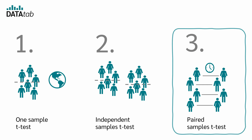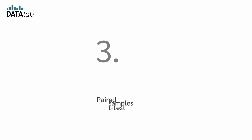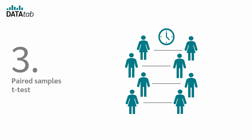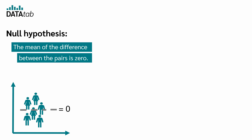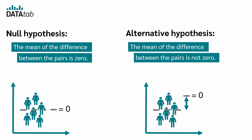When do we use the paired samples t-test? We use the paired samples t-test to compare the means of two dependent groups. In the paired t-test, the null hypothesis is that the mean of the difference between the pairs is zero, and the alternative hypothesis is that the mean of the difference between the pairs is unequal to zero.